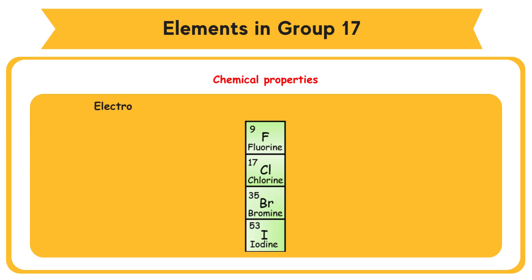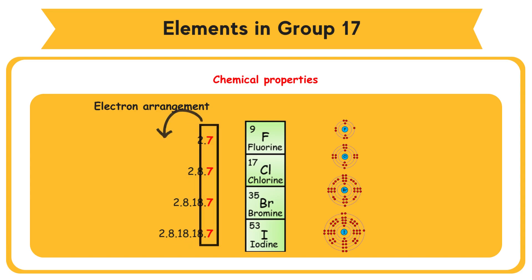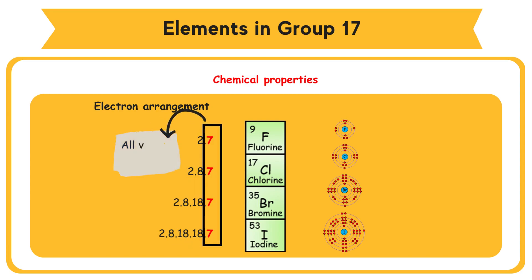The electron arrangement of Group 17 elements: Fluorine 2.7, Chlorine 2.8.7, Bromine 2.8.18.7, Iodine 2.8.18.18.7. All have 7 valence electrons.